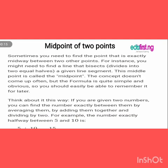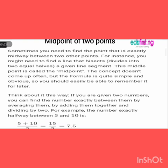Now we are going to start with midpoints of two points. If you are given two numbers, five and ten, and you are asked to find the midpoints between them, what you do is find their average. You say five plus ten divided by two, that's fifteen divided by two, and then you have seven point five. That is what midpoint means.